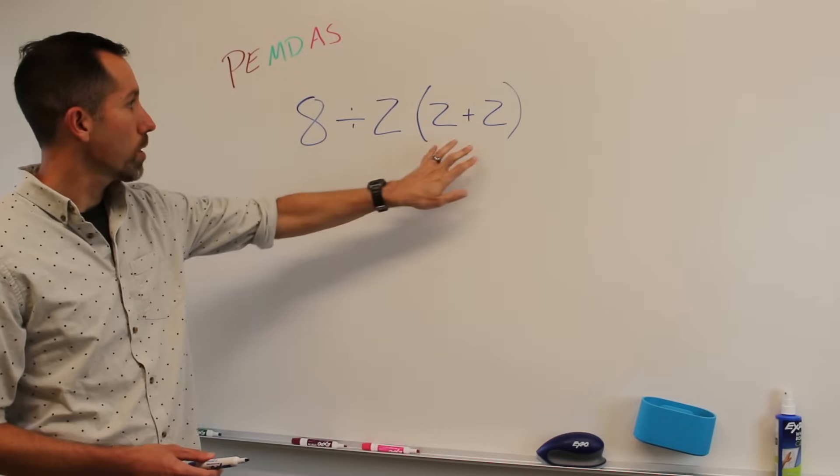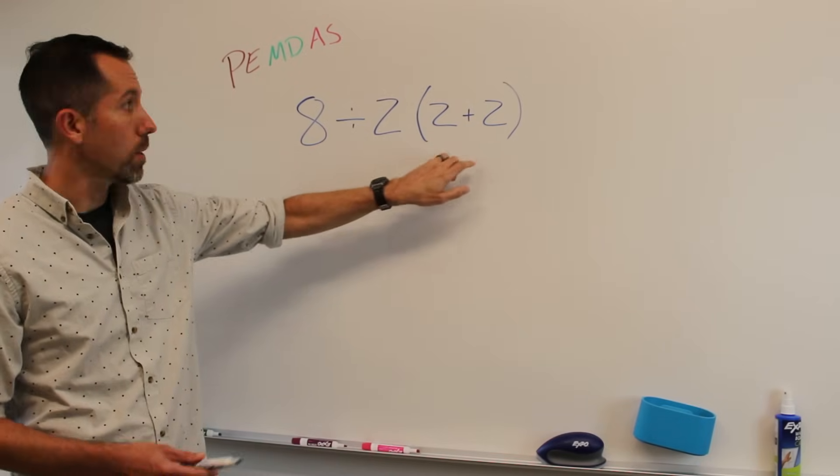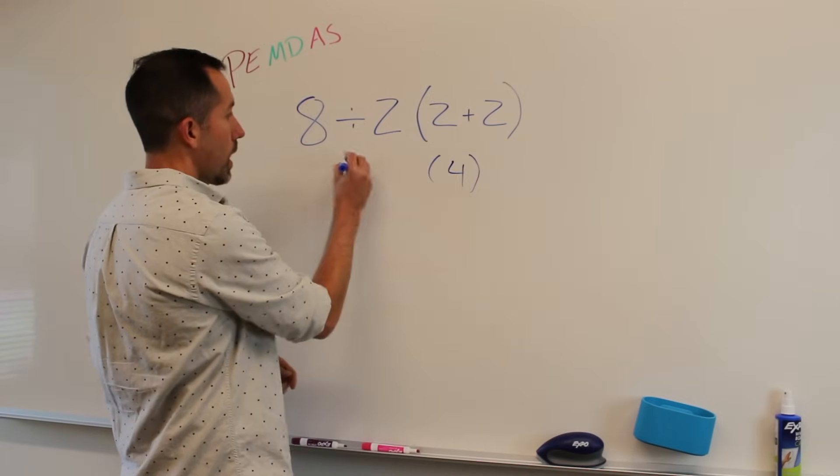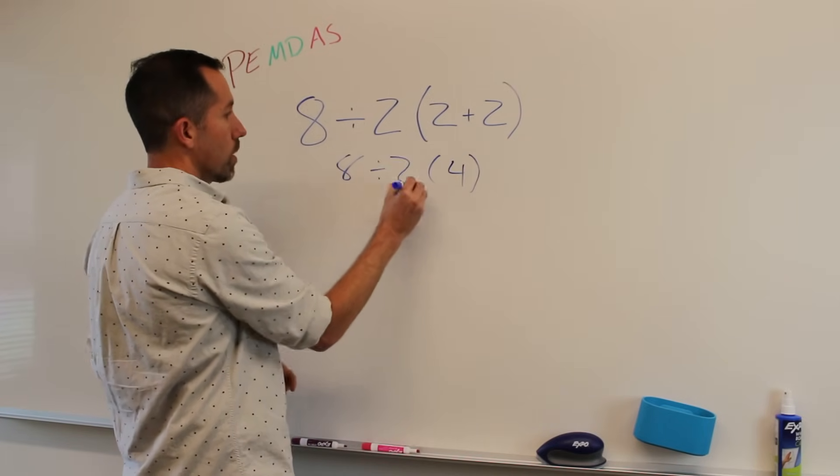So here, the first thing I want to start with is we have a parenthetical statement, the 2 plus 2. So we want to add those together and we get 4. So then we've got 8 divided by 2 times 4.